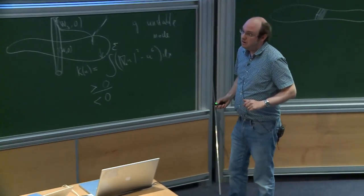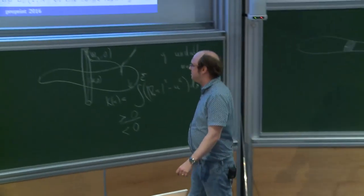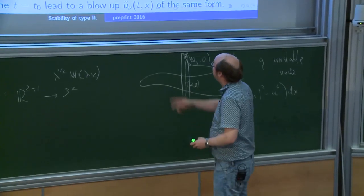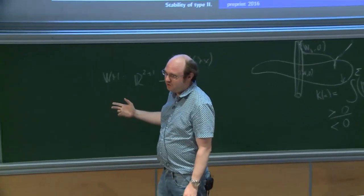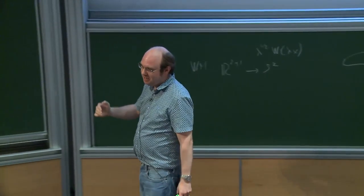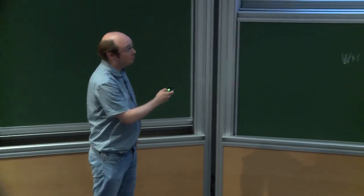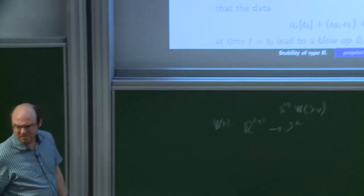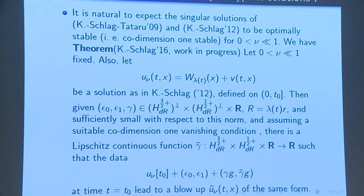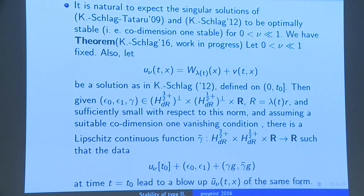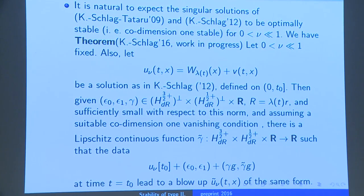What is this co-dimension one vanishing condition? Roughly speaking, for these perturbations it's a nonlinear condition, but to first order you can think of it as a condition on ε_1. You can write it down: an integral has to vanish in terms of its Fourier transform with respect to the operator — it's not so complicated. You see it if you simply approximate the equation in suitable coordinates by a linear equation and want to prevent certain growth coming from the resonance.